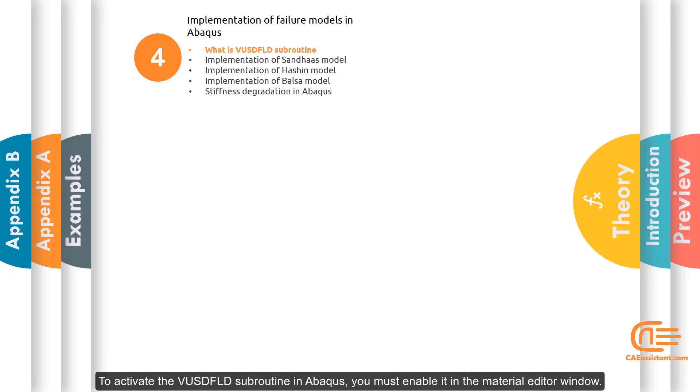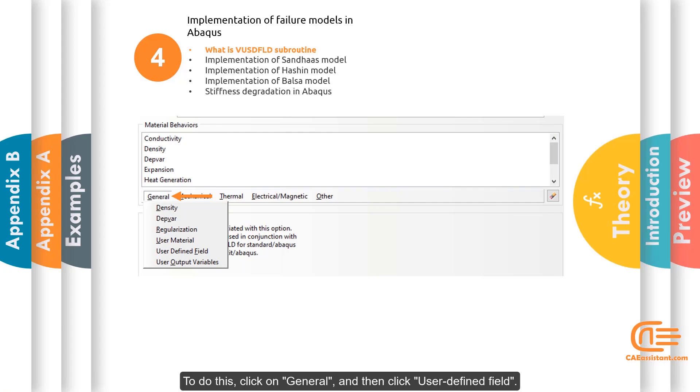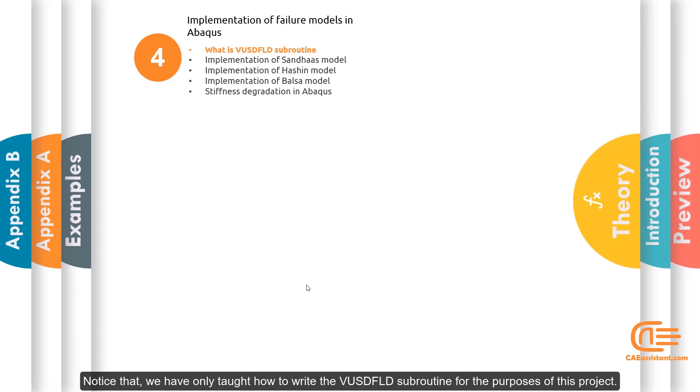To activate the VUSDFLD subroutine in Abaqus, you must enable it in the Material Editor window. To do this, click on General and then click User Defined Field. Notice that we have only taught how to write the VUSDFLD subroutine for the purpose of this project.